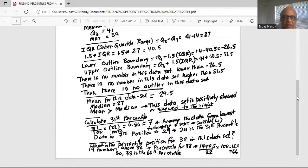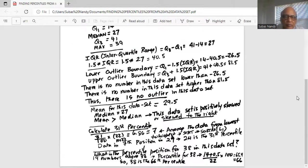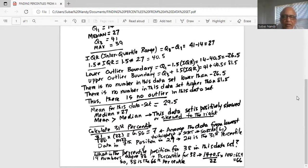31 divided by 100 is 0.31 times 22, because my sample size is 22, equals 6.86, which we round to 7. So we are looking for the data in the seventh position.